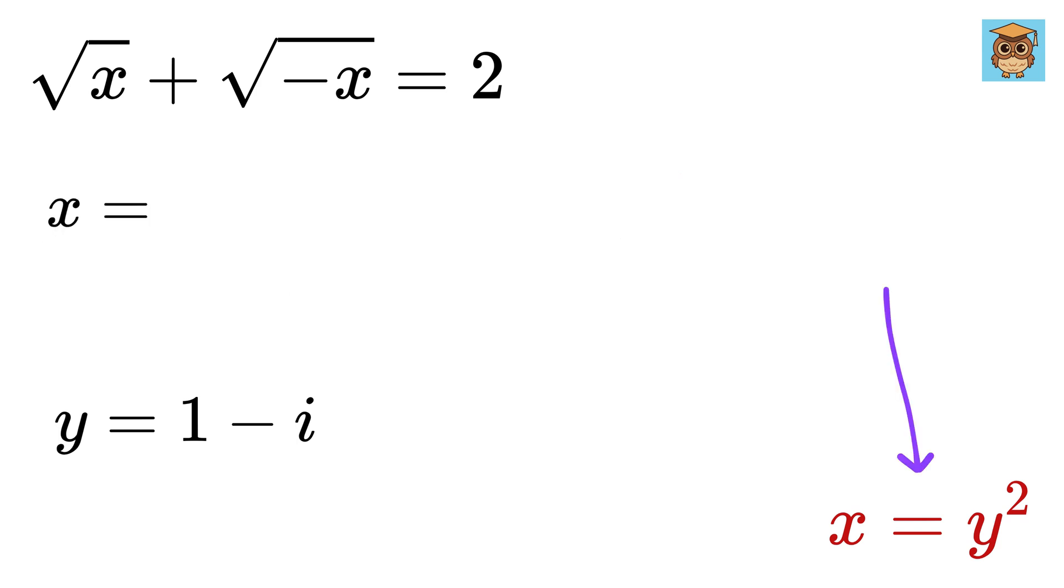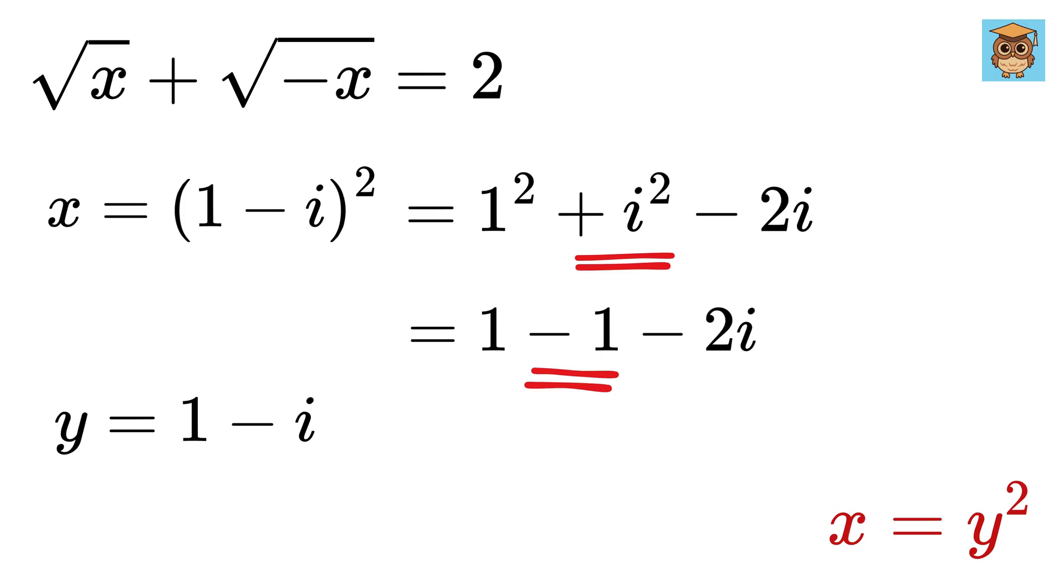Now, x equals y square, or this square. Expand it to get 1 square plus i square minus 2i. This will become negative 1 and will cancel out with 1, and we get x equals minus 2i.